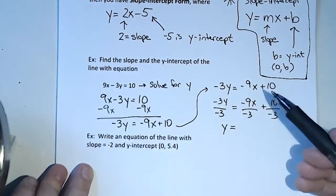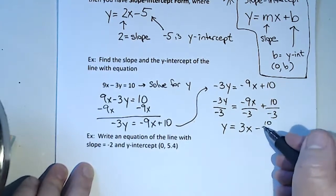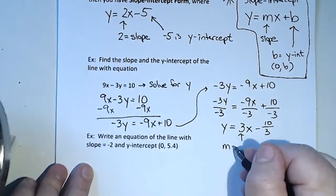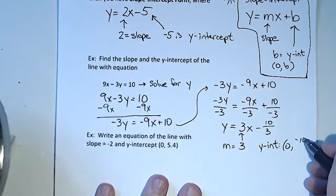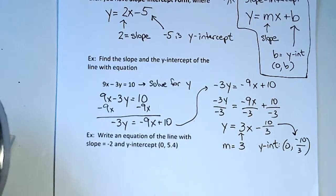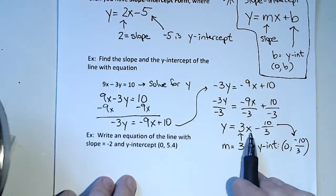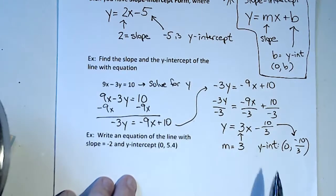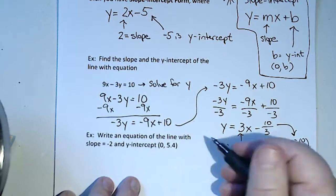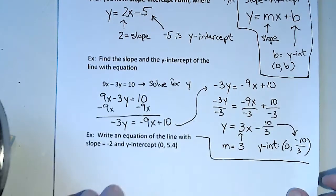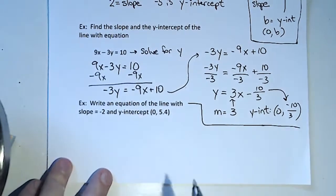I get y = -9/-3 which is positive 3, so y = 3x - 10/3. The slope is 3, and the y-intercept is the point (0, -10/3). Why is this the y-intercept? If I plug in 0 for x, this term disappears and you get y = -10/3.